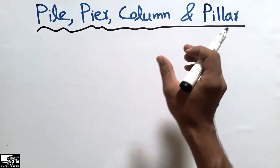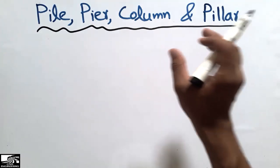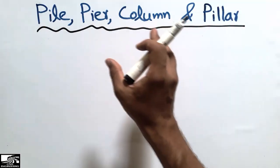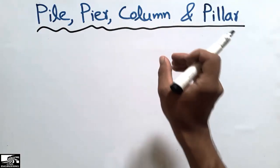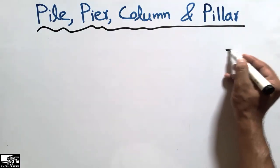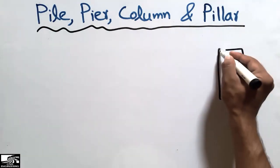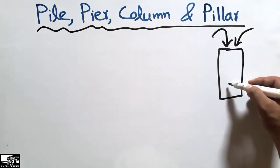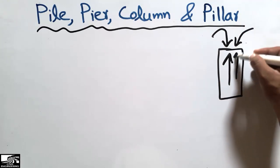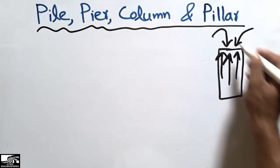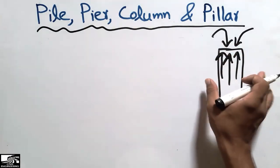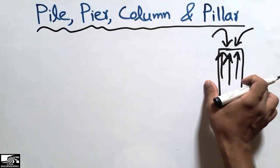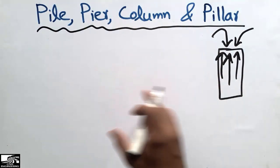These four terms all refer to vertical members, and they are all compression members — they take load in compression. For example, if a load is applied in the vertical position, they resist it in a compressive way. So these structural members are called compression members and vertical members, but there are quite clear differences between each of these technical terms.